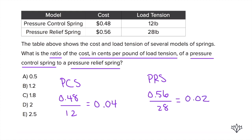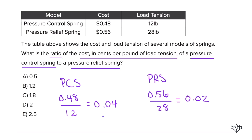So what is the question asking us? It's asking for the ratio of the cost per pound of the pressure control to the pressure relief spring. It's four cents over two cents. You don't even have to worry about the decimals — it's literally just four over two, which comes out to be two. Answer choice D.